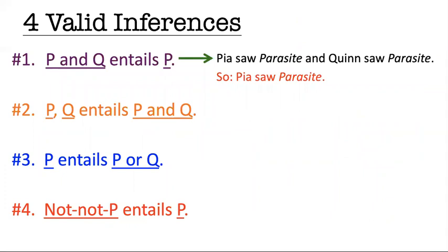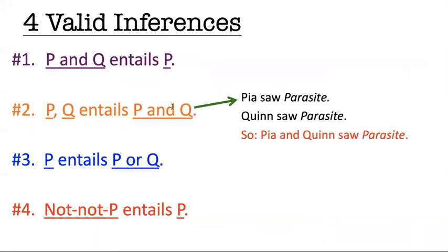In order to understand these four easy rules, you just have to think about how we reason in English. If I have an and sentence — if I know P and Q is true — clearly that means P has to be true. That's just how the word 'and' works. If I know 'Pa saw Parasite and Quinn saw Parasite,' then of course it follows that Pa saw Parasite. This is such an obviously valid way of reasoning. Similarly, reasoning to an and is really easy: if I know P and I also know Q, then clearly I know P and Q — I can just put them together with an and.